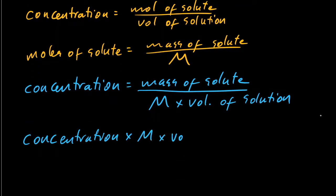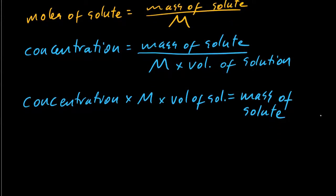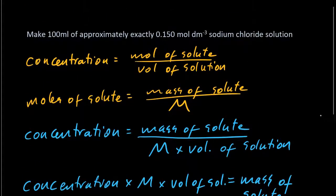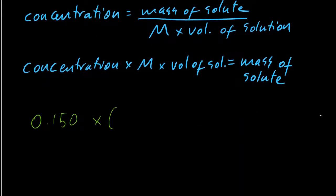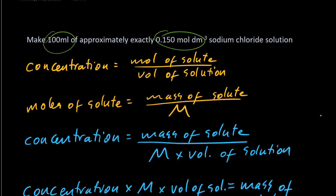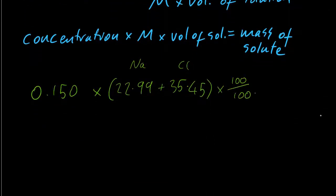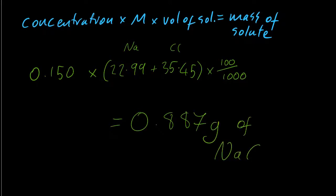It turns out you need three things: concentration, molar mass, and volume. The concentration is in the question: 0.150 moles per decimetre cubed. The molar mass — check the periodic table for sodium chloride: 22.99 for sodium, 35.45 for chloride. And the volume is 100 millilitres — convert to decimetre cubed by dividing by 1000. So I need 0.887 grams of sodium chloride to make this standard.